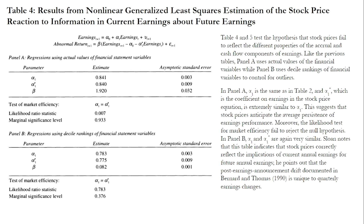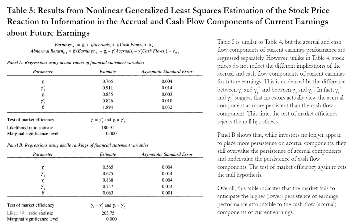Table 5 presents results from non-linear generalized least squares estimation of the stock price reaction to information in the accrual and cash flow components of current earnings about future earnings. Table 5 is similar to Table 4 but regresses the accrual and cash flow components separately. However, unlike Table 4, stock prices do not reflect the different implications of the accrual and cash flow components for future earnings. This is evidenced by the differences between gamma-1 and gamma-1-star and between gamma-2 and gamma-2-star, observable in both regression methods. Overall, this table indicates the market fails to anticipate the higher persistence of earnings performance attributable to cash flow components and the lower persistence attributable to the accrual component.